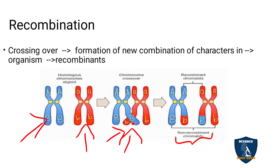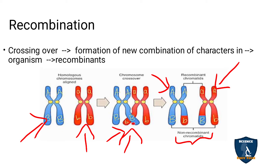On either side, the chromatids that did not exchange are the parental form — this one is parental form, and this one is also parental form.